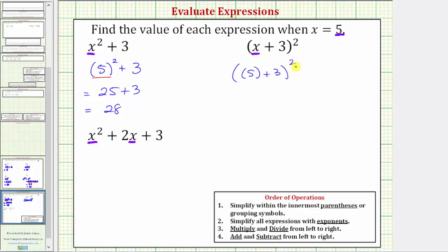Following the order of operations, step one, we simplify within the parentheses. So the first step is to find the sum. Five plus three is equal to eight. So this simplifies to eight squared, which means we have two factors of eight. Eight times eight is equal to 64.